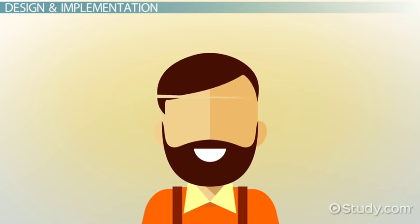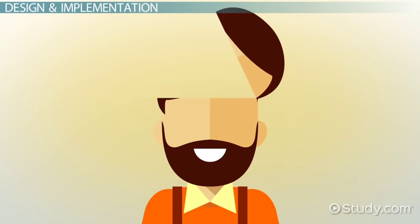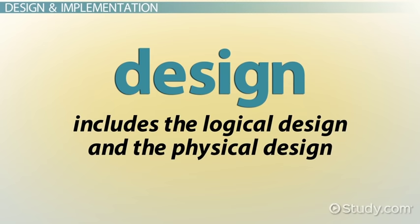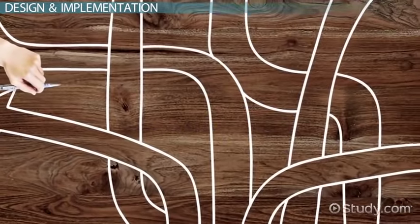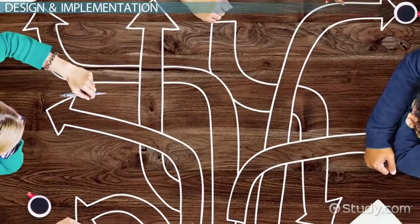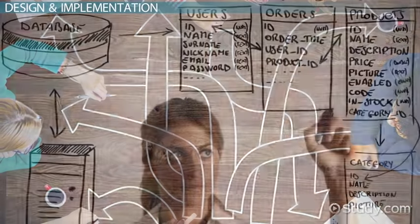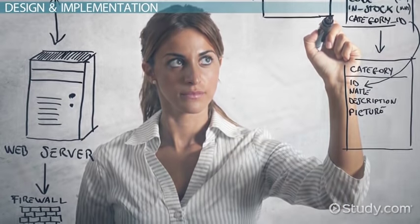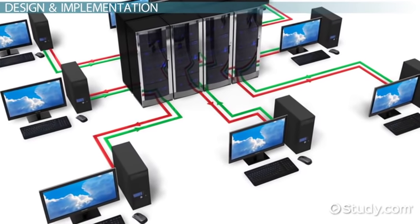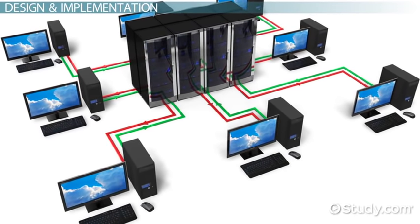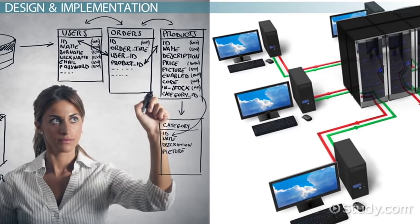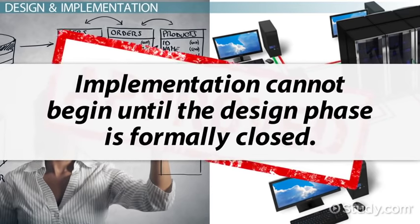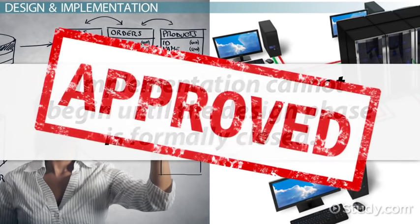With the requirements in mind, the project team designs the software to meet the stated business needs and solve identified problems. The design phase includes the logical design and the physical design. The logical design is an abstract representation of how the software data flows — the inputs and the outputs — often shown graphically as a data flow diagram. The physical design determines the hardware, such as storage and network hardware, which will make the logical design a reality. Once fully complete, the project team will review and approve the design.